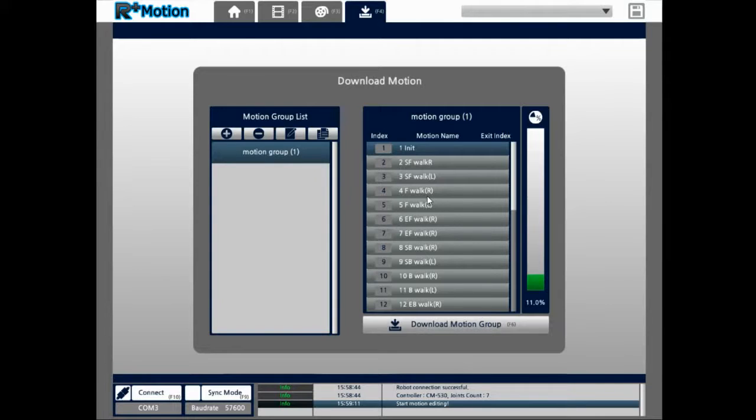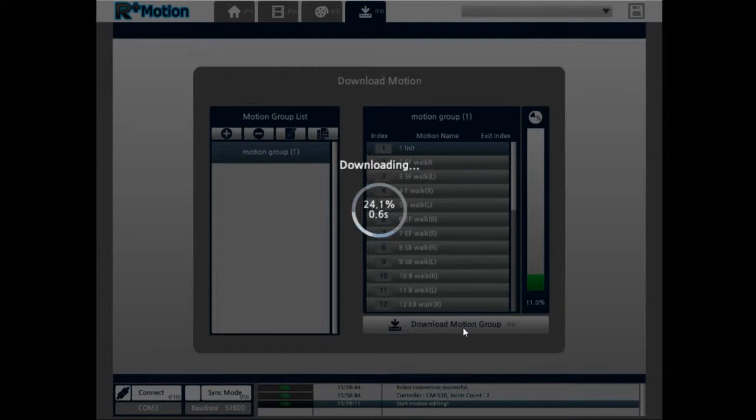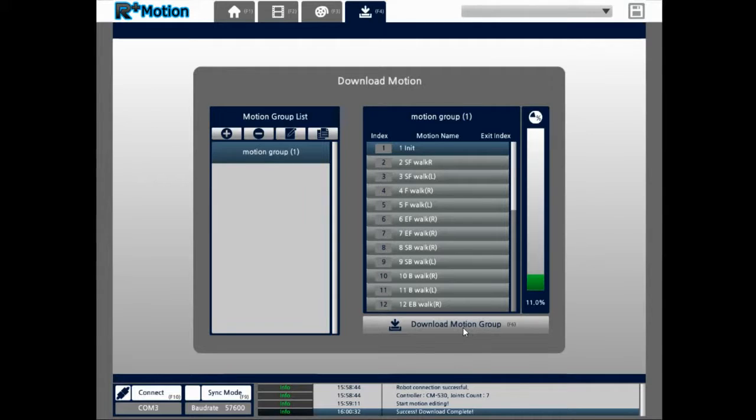we just want to download the example motion group. The motion group is a set of motions or movements that we have already given to you all to use. So let's download the motion group to the robot. And it's finished.